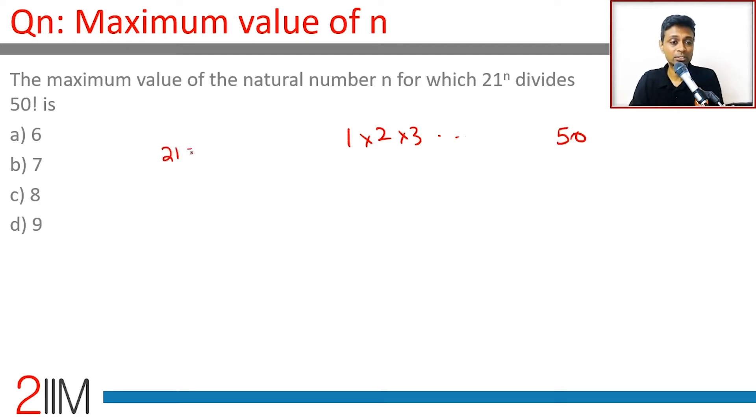21 is 3 into 7, so we get a 3 and a 7. We need to find what is the highest power of 3 and the highest power of 7 that sits inside 50 factorial.